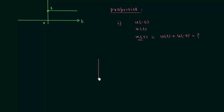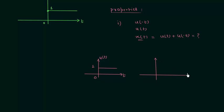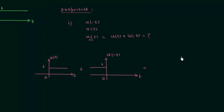I will first plot the waveform of signal u(t). Then I will plot the waveform of signal u(-t). To obtain u(-t), we perform time reversal or folding. After performing the time reversal, the waveform of u(-t) will look like a mirror image of u(t). This gives us the waveform of signal x(t), which is equal to u(t) plus u(-t).